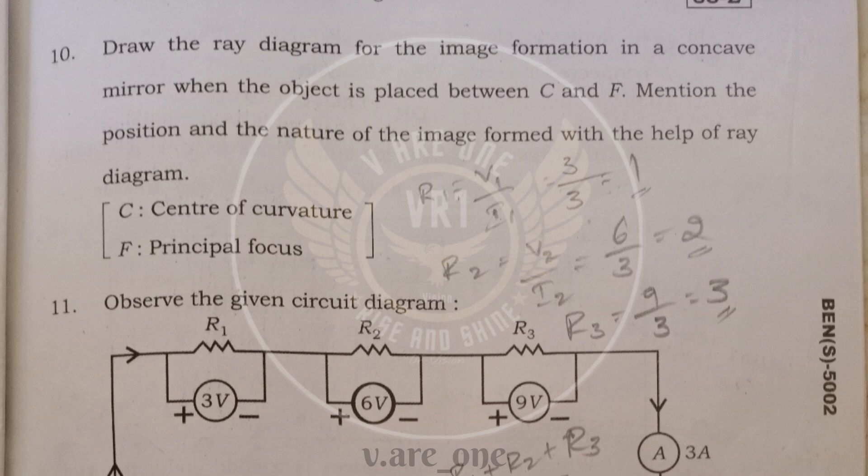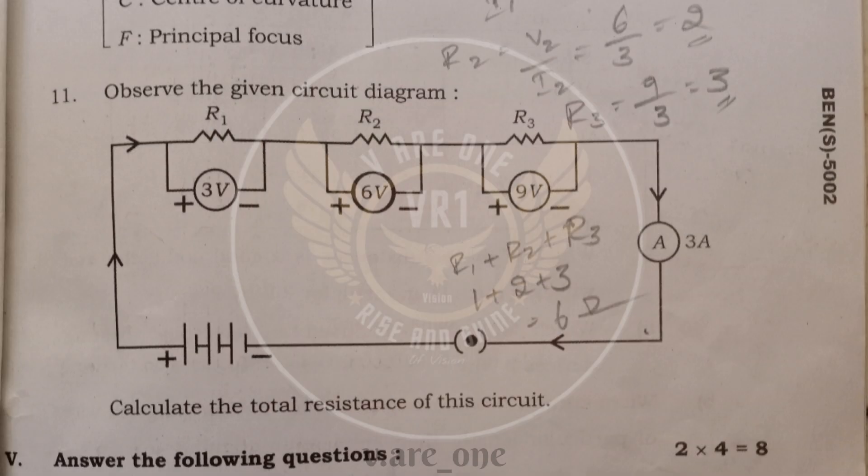Tenth question. You need to write a ray diagram of the object is placed between C and F. And then you need to write the nature of the image. Then you have to calculate a resistance. They have given potential difference in current. So you have to find out Rn, R1, R2, and R3. Then you have to find out the total resistance connected in series.